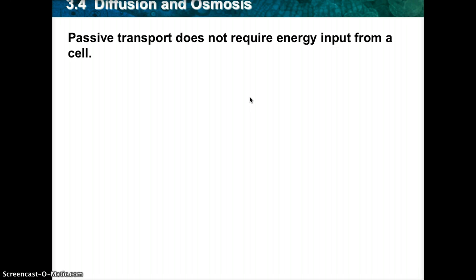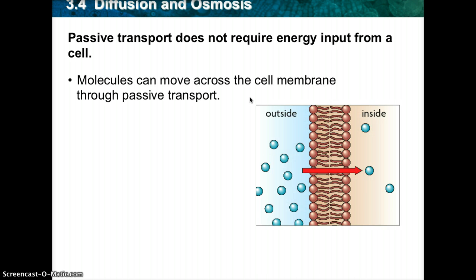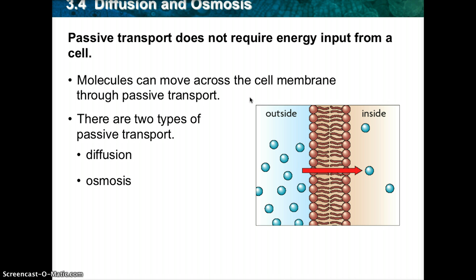Passive transport does not require energy input from a cell, so make sure you understand what passive transport is. Molecules can move across the cell membrane through passive transport — they don't need the assistance of energy, which is ATP, and they don't need facilitated transport with the help of proteins, which are in the cell membrane. So there are two types: diffusion and osmosis.